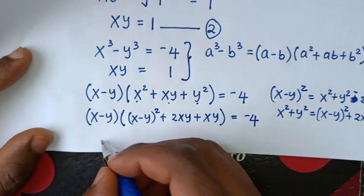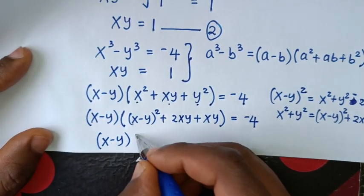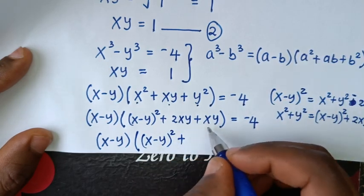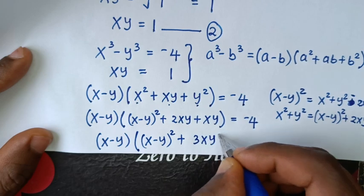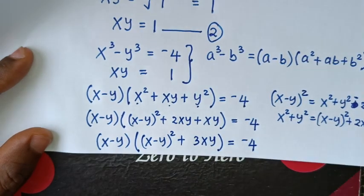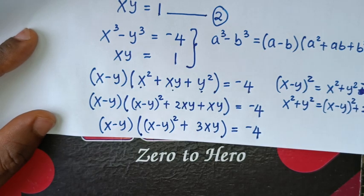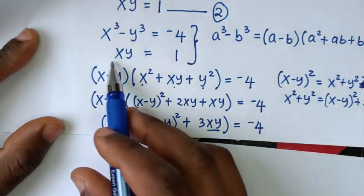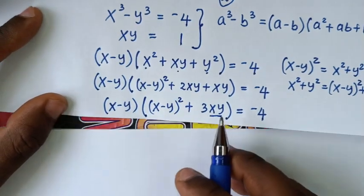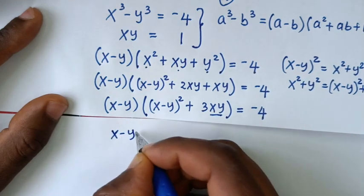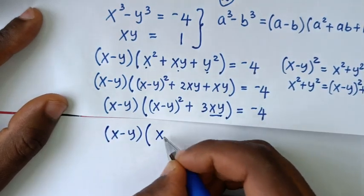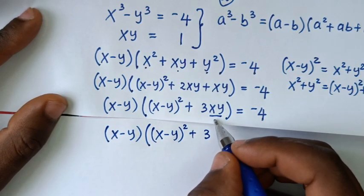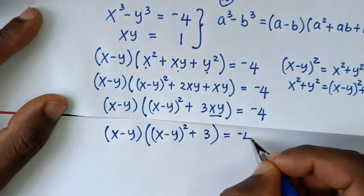Simplifying, this becomes (x − y)[(x − y)² + 3xy] = −4. Substituting xy = 1 from equation 2, we get (x − y)[(x − y)² + 3] = −4.